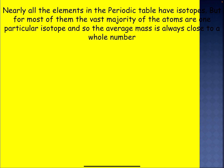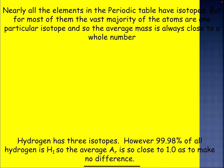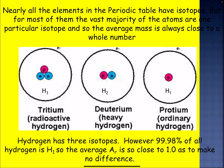Nearly all of the elements in the periodic table have isotopes, but for most of them the vast majority of atoms are one particular isotope, so the average mass is always close to a whole number. Hydrogen has three isotopes; however, 99.98% of all hydrogen is hydrogen-1, so the average atomic mass is close to 1. The three isotopes of hydrogen are hydrogen-1, deuterium, and tritium.